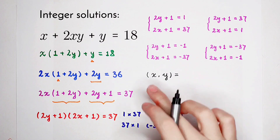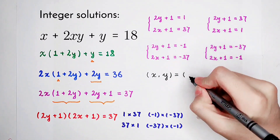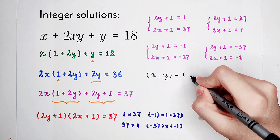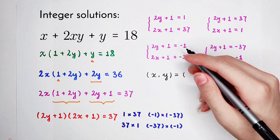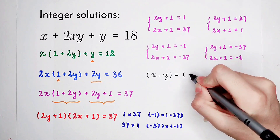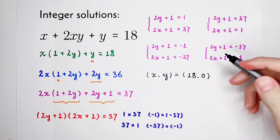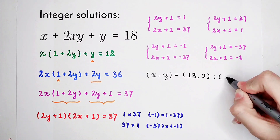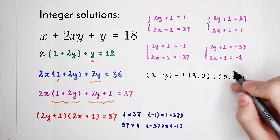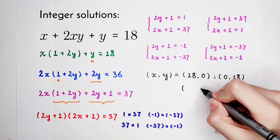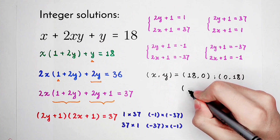We have to solve for the solutions of each of these cases — only 4 pairs of solutions in total. First: (1−1)/2 = 0, so y=0; and (37−1)/2 = 18, so x=18. From the second case, just switch the order: x=0 and y=18. From the third case: y=−1 and x=−19.